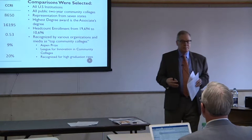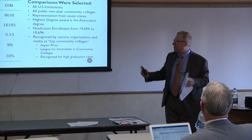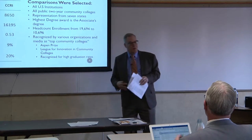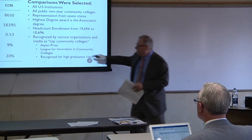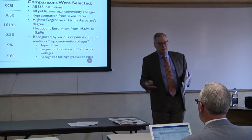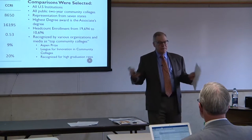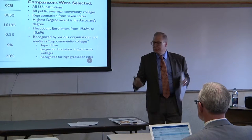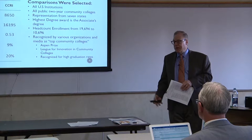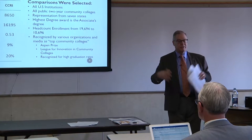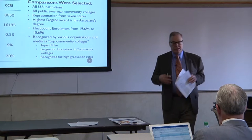There are ways they are recognized — one is called the Aspen Prize, which was just released on March 24th. Ten institutions every year qualify for the Aspen Prize, with finalists, semi-finalists, and then a winner — a very rigorous process of quality. There's also the League for Innovation and Community Colleges, a very select group of institutions that are leaders in many different things. These institutions were also recognized in the press and for their high graduation rates.